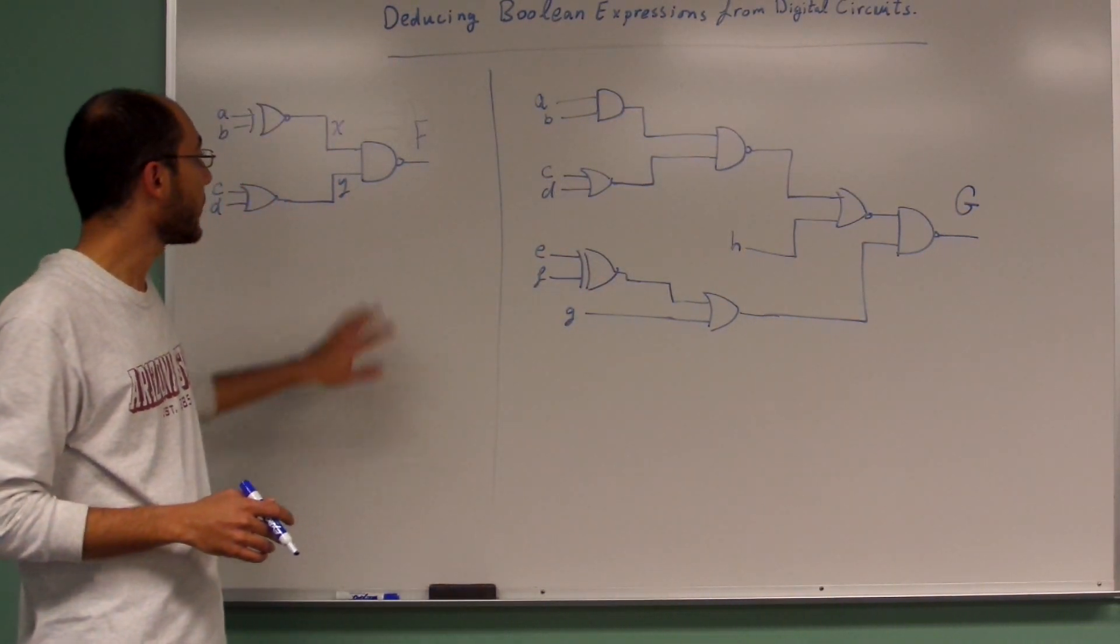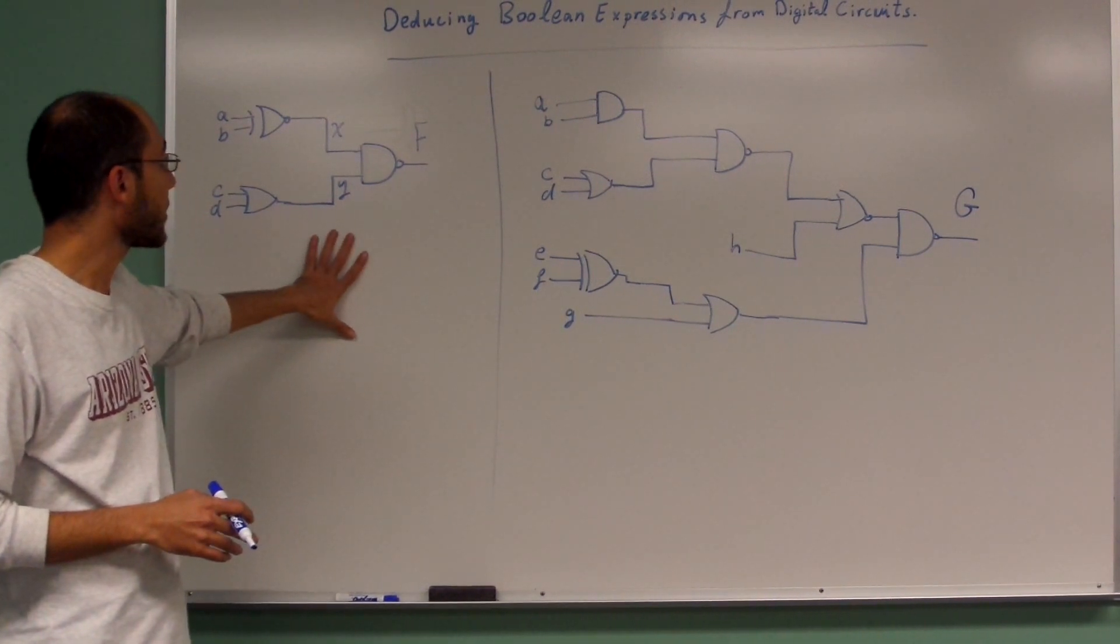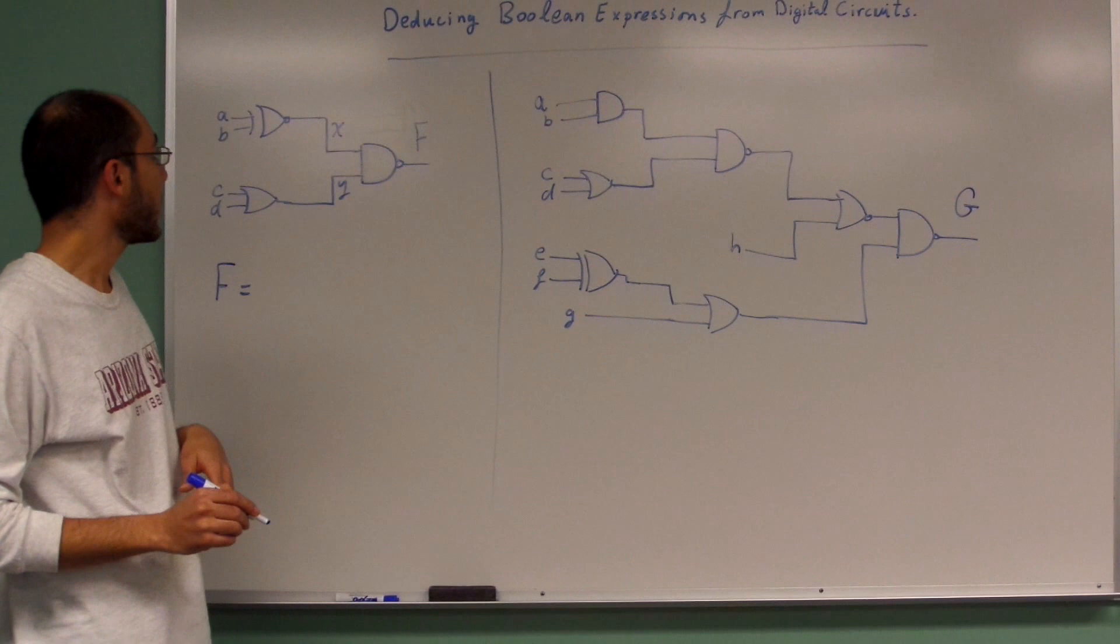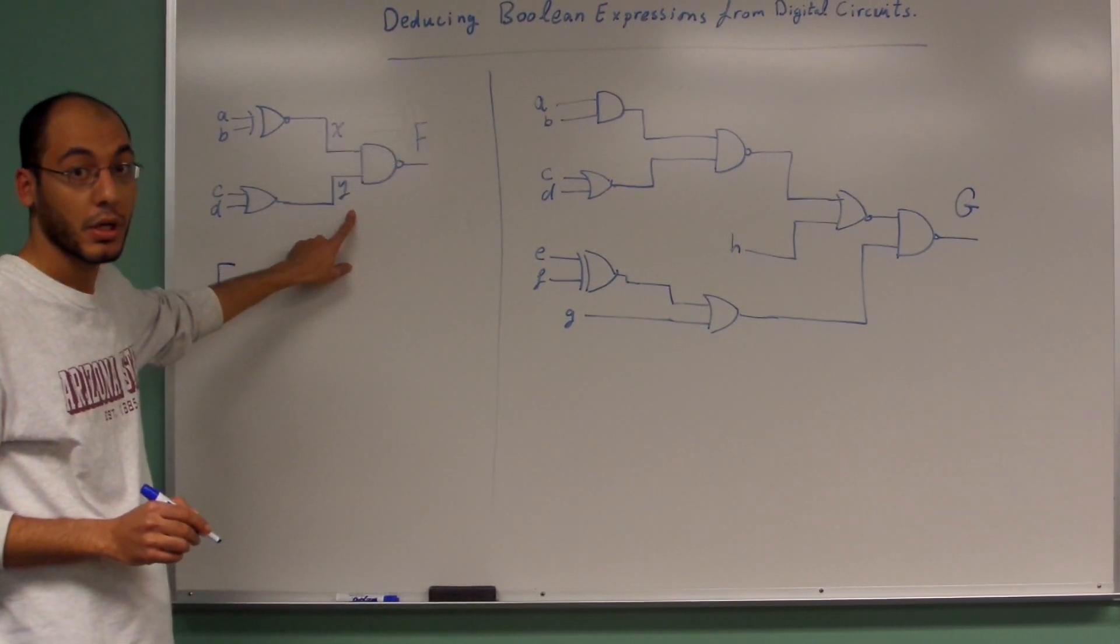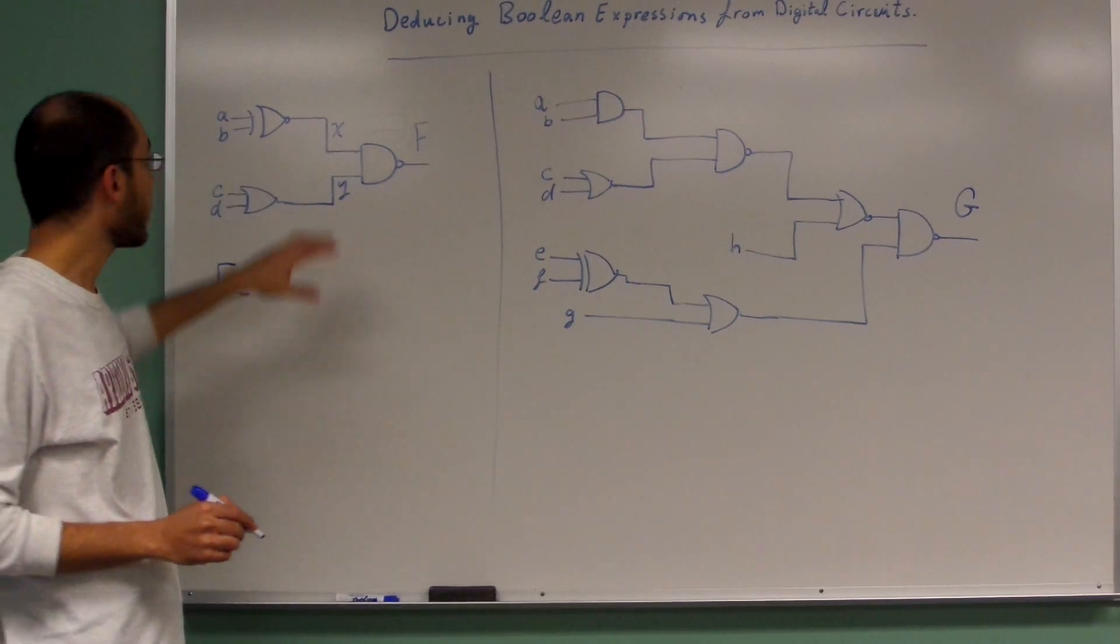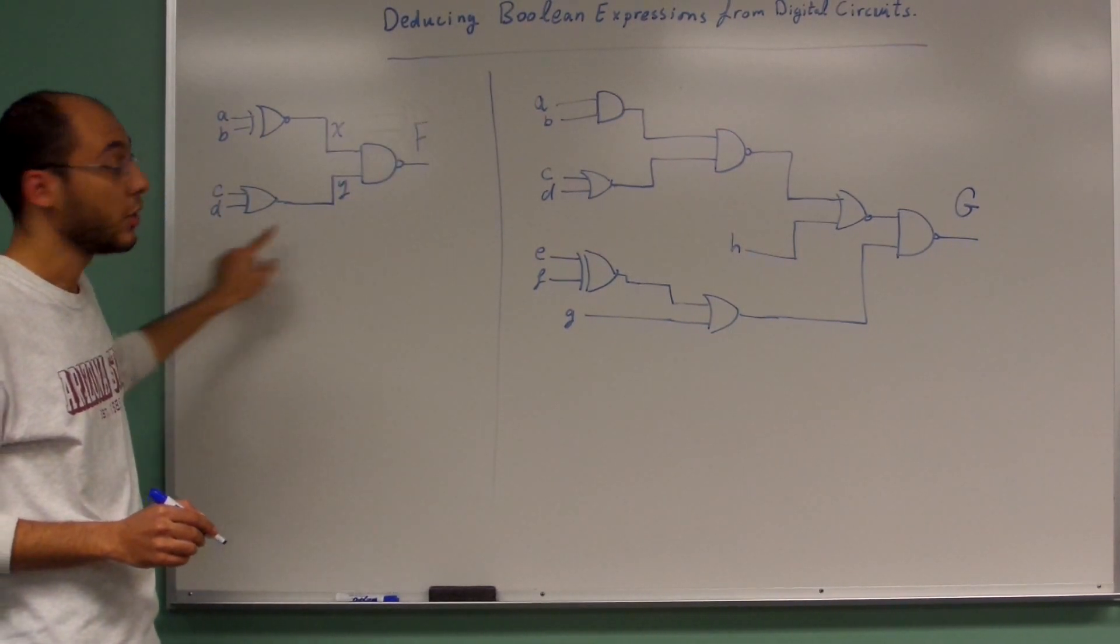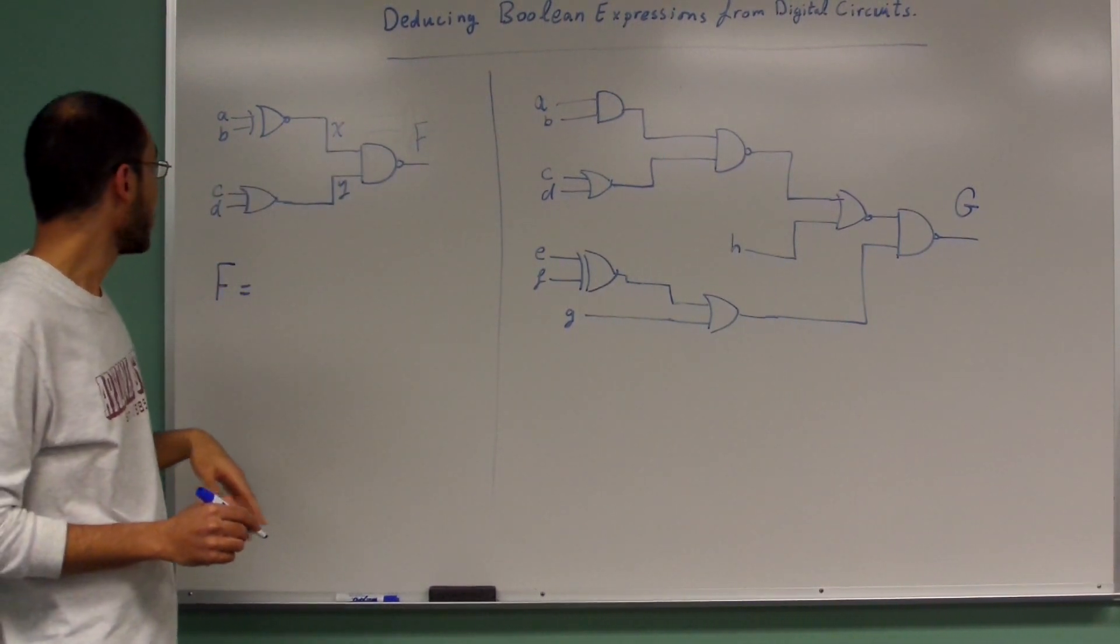If you want to start writing down the expression for F, you need to write down the expression in terms of X and Y and then proceed with that. Do not write down the expression of F in terms of A, B, C, and D directly. You need to proceed from the output first till the input.